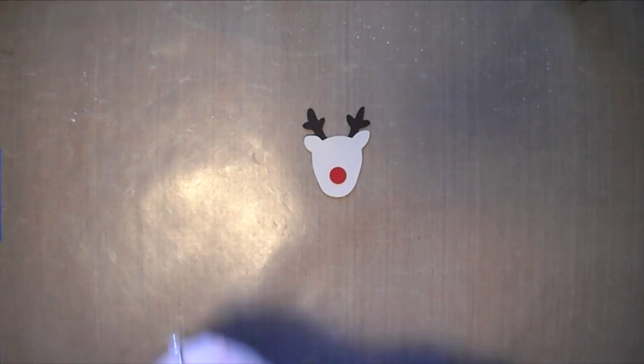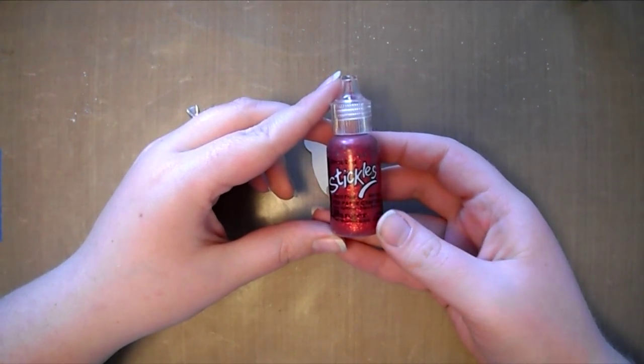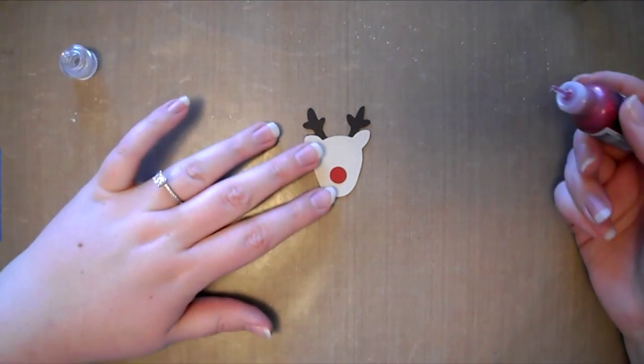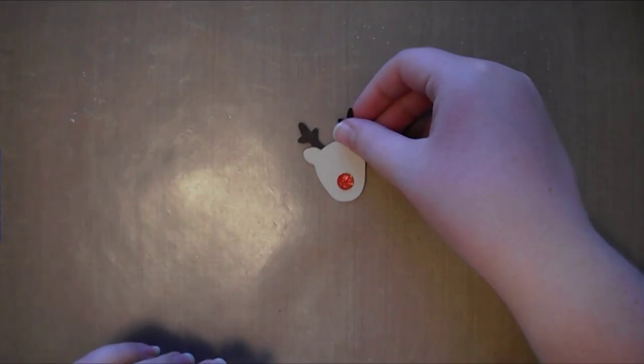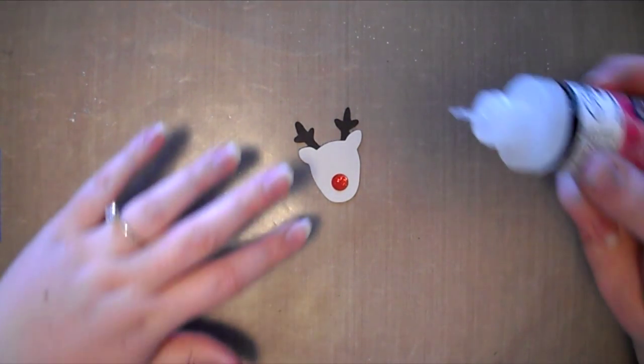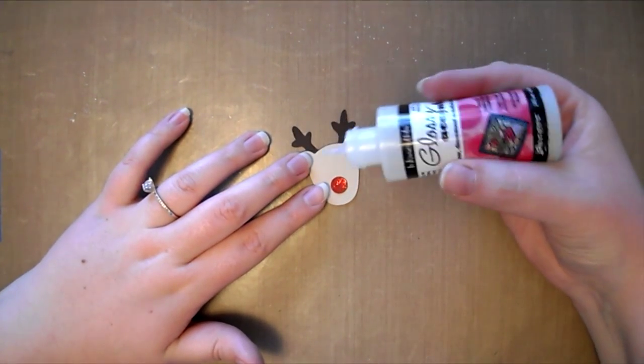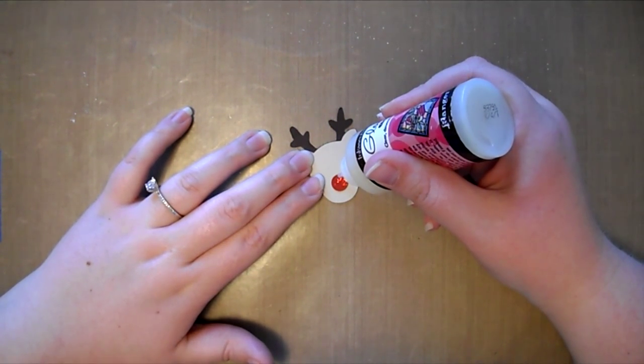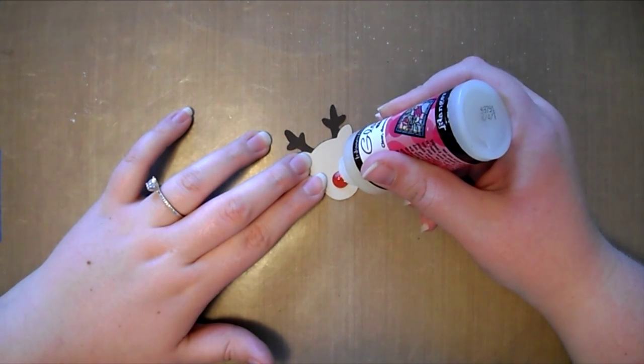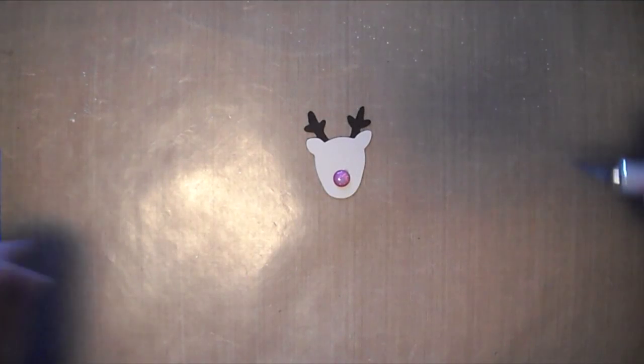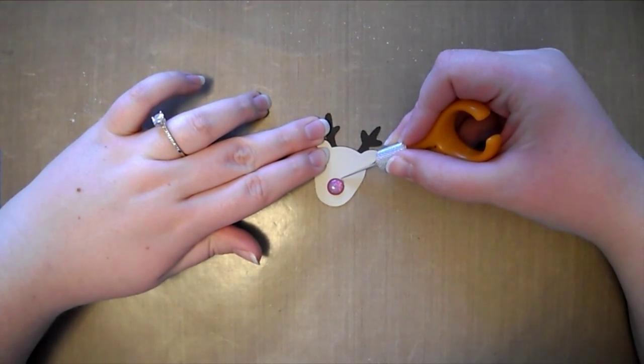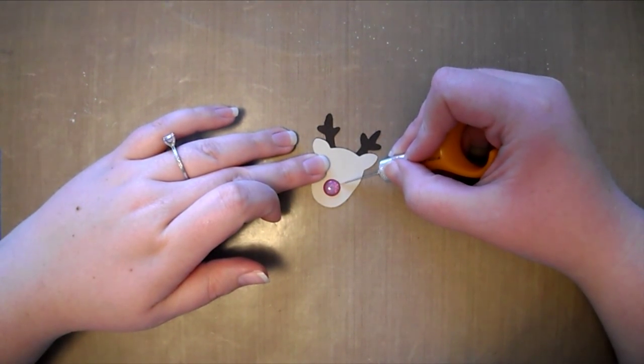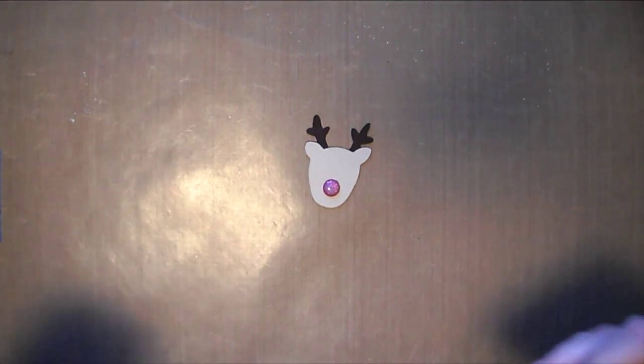Once I have the nose attached to my reindeer, I'm going to use some Christmas red stickles to add a little shine to the reindeer nose. After I've done that and let it dry, I'm also going to add some glossy accents to the nose to give it even more dimension. If you happen to get glossy accents where you don't want it, you can just take an X-Acto knife and lightly scrape that away.